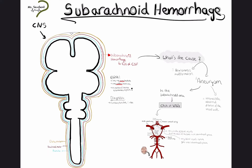We have a type of hemorrhage which is called subarachnoid. The subarachnoid space is normally full of CSF.